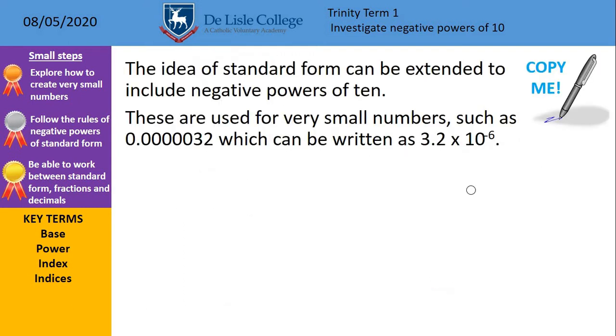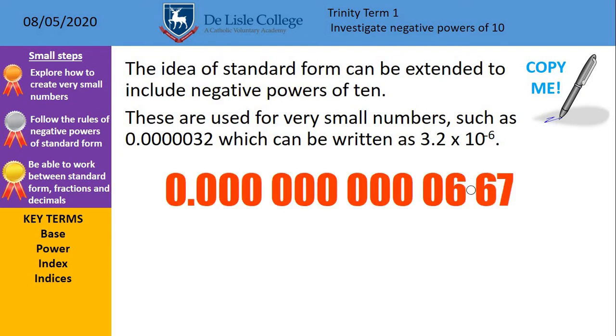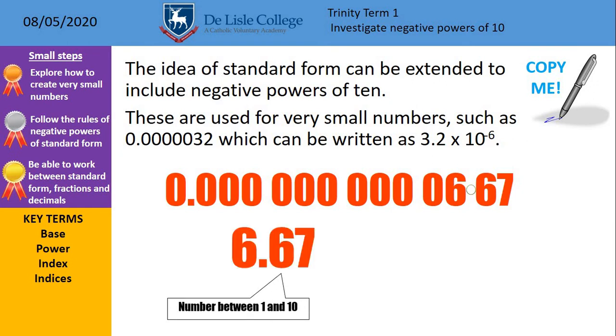So, the idea of standard form can instead include negative powers of 10, and these are used for very small numbers, such as the figure there, which can be written as 3.2 times 10 to the power of minus 6. Now, I'm going to show you on the screen here with hopefully some cutting-edge animations to show how we move that decimal point for you. So, here's our large figure. The white circular decimal point I've added in, and that's going to be where we get the first bit from. So, we first need a number between 1 and 10, so I've gone 6.67. There's no other alternatives.